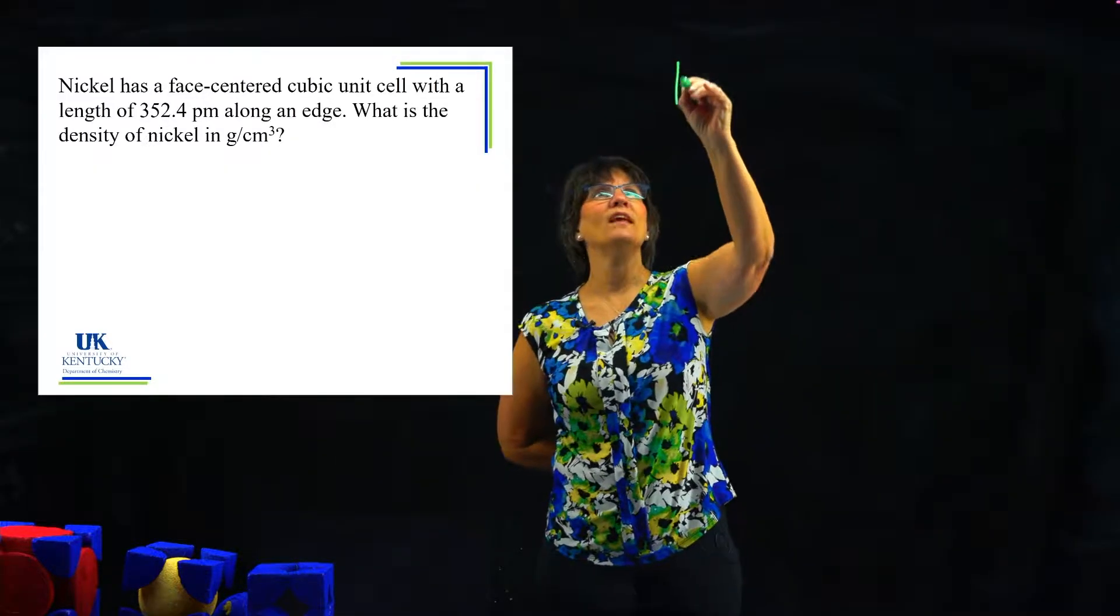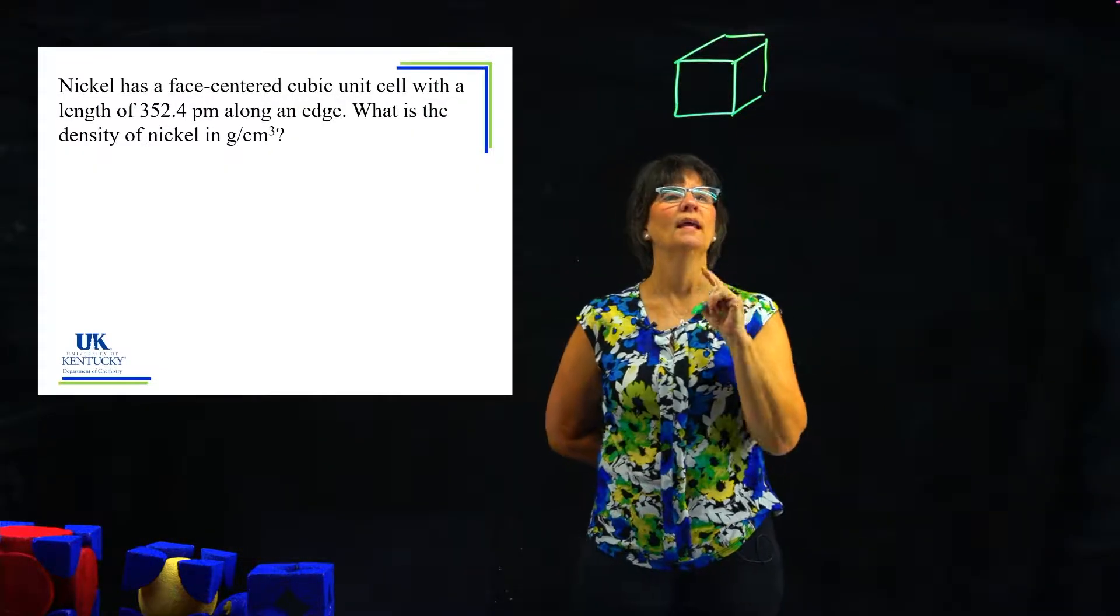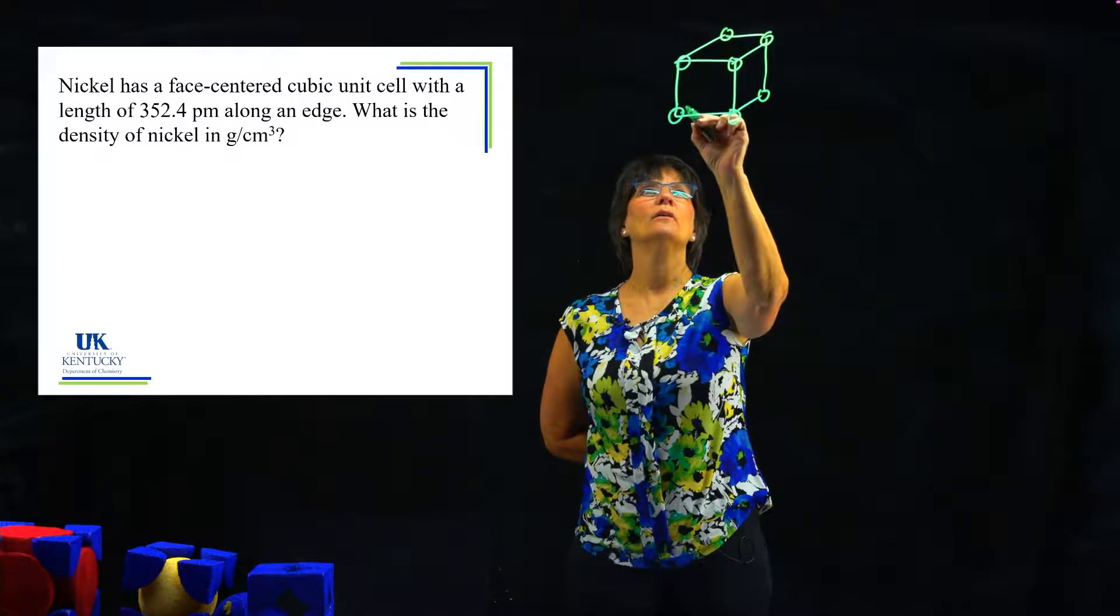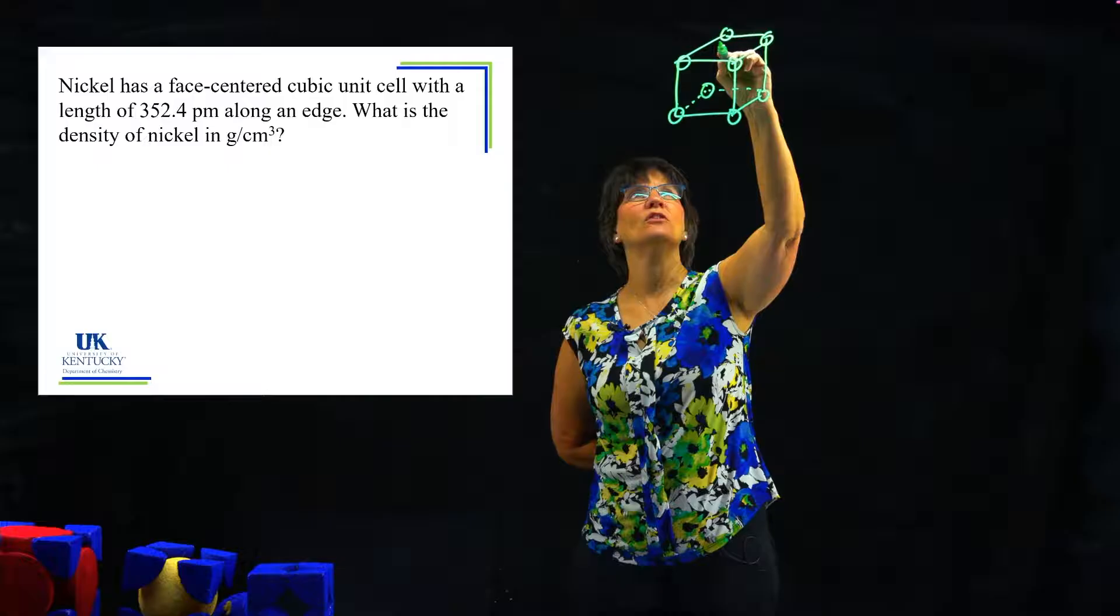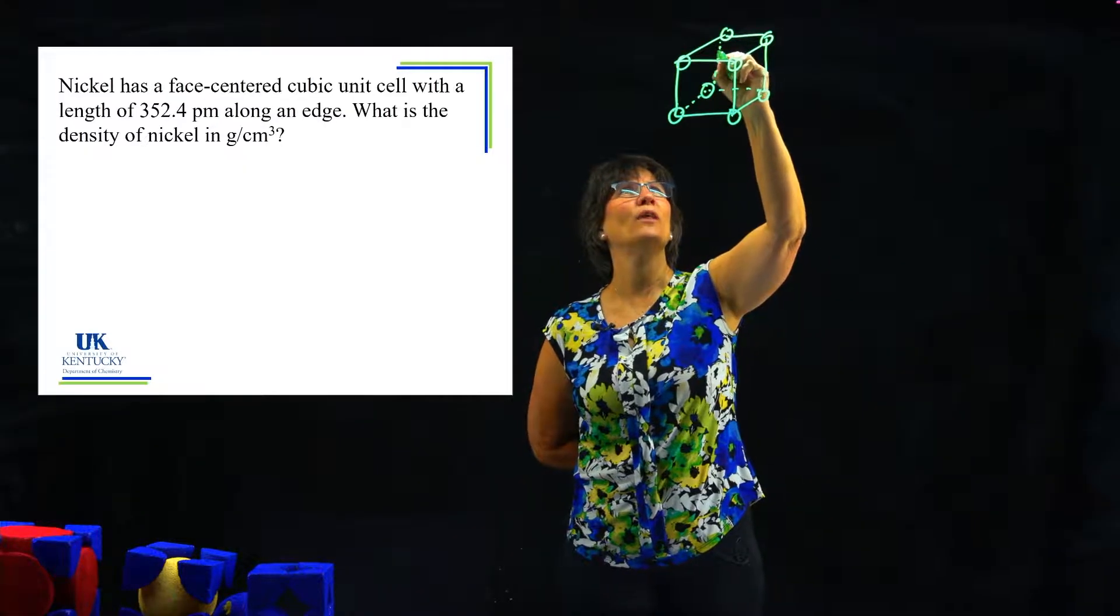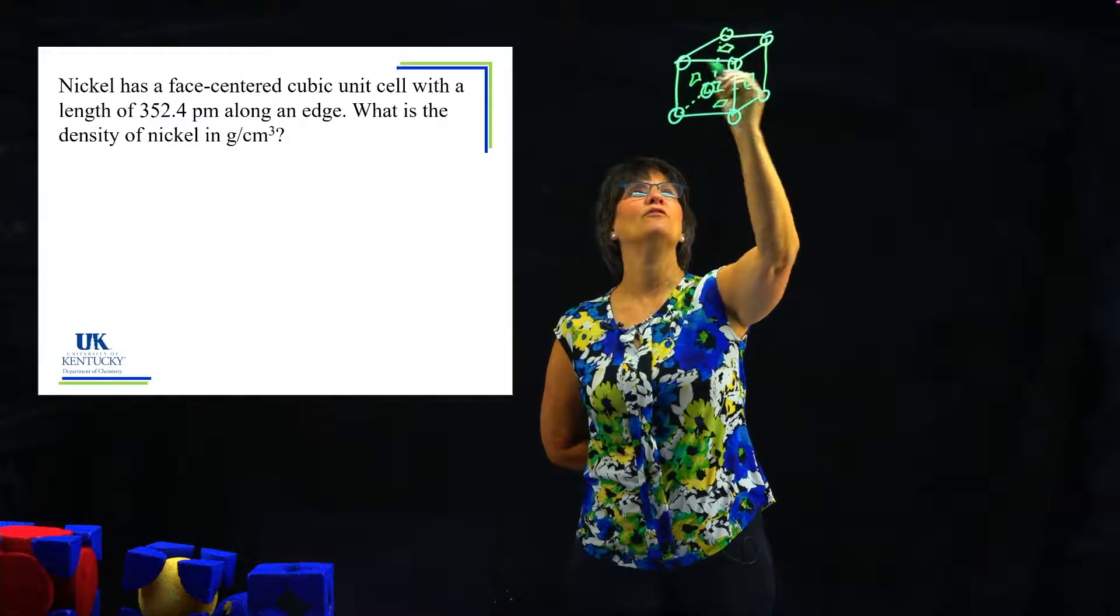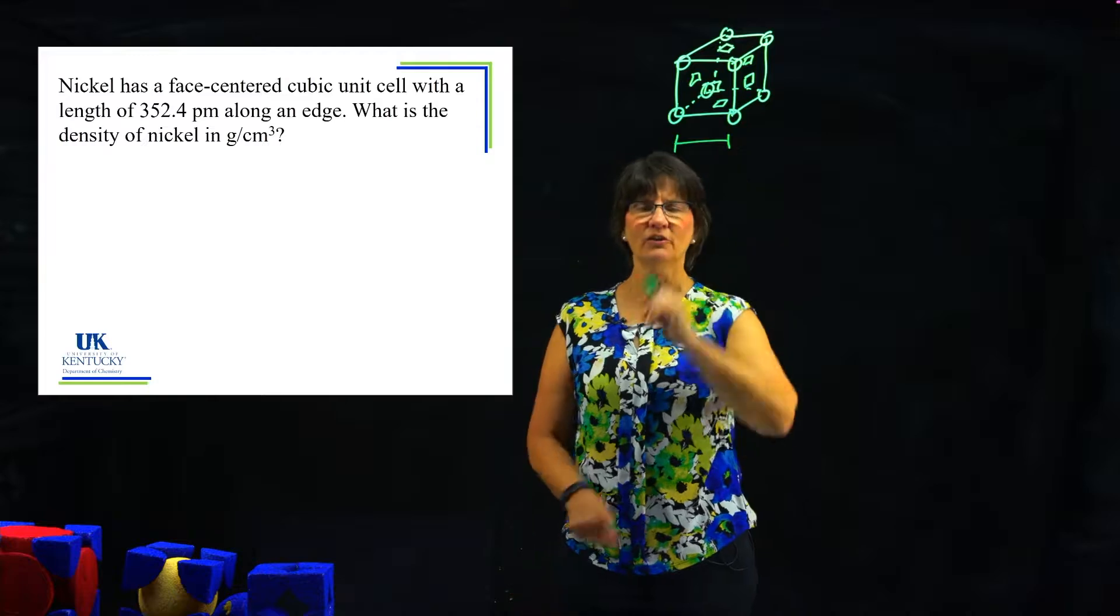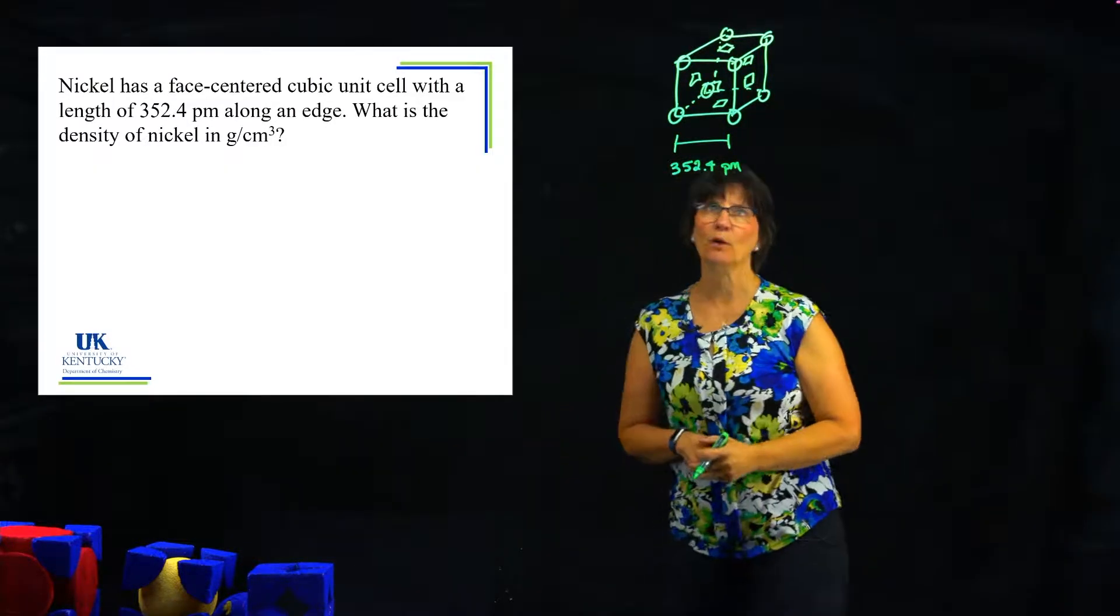So this first one, if you read through that, seems a little bit complicated. We have nickel, it says it's face-centered cube, it tells us how long the edge is, and then it wants to know the density. Let's start by drawing out what they say we've got. It is a face-centered cube. In a face-centered cube, we have a nickel at each corner, and there is one on each face.